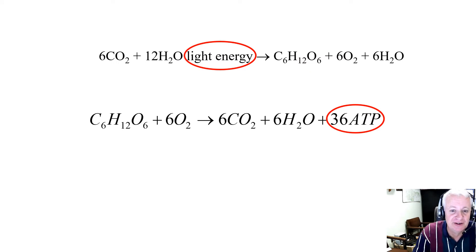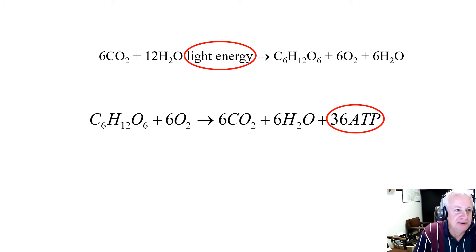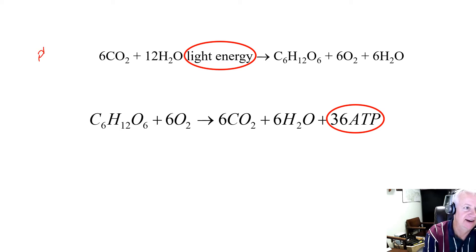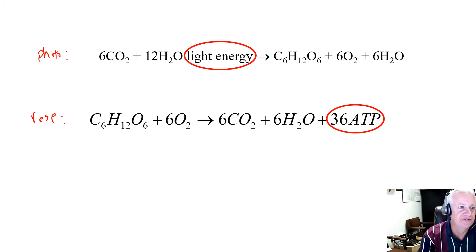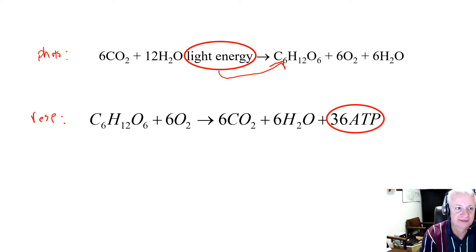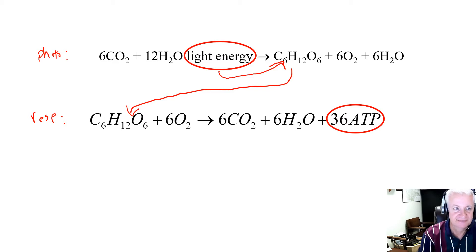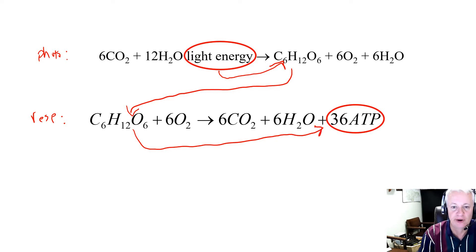Here's the equation for photosynthesis and the empirical equation for respiration side by side. Photosynthesis takes energy from light and stores it in the chemical bonds of glucose. Respiration then takes that energy stored in the chemical bonds of glucose and releases it in the form of ATP.